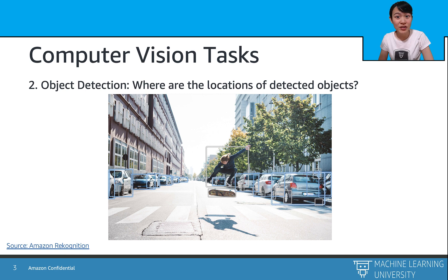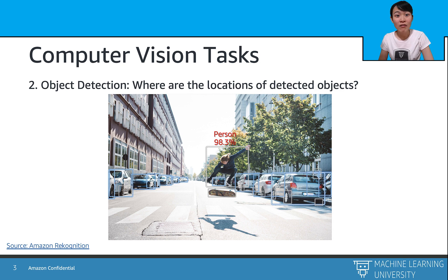Another computer vision task we will talk about in this course is object detection. This task recognizes objects in an image and returns their object labels and pixel locations on that image. As you can see, we have a person labeled here with a bounding box and a confidence score of 98%, representing how confident our model is in its prediction.